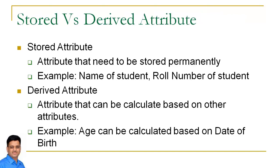Last category hai stored or derived attributes. Jo attribute database mein store kiya jata hai, usko hum stored attribute kehte hai. For example, roll number, name, date of birth — yeh sare database mein store karne wale attributes hain. Lekin jo attribute jis ki value kisi doosre attribute se calculate ki ja sakti hai, us attribute ko derived attribute bola gaya.